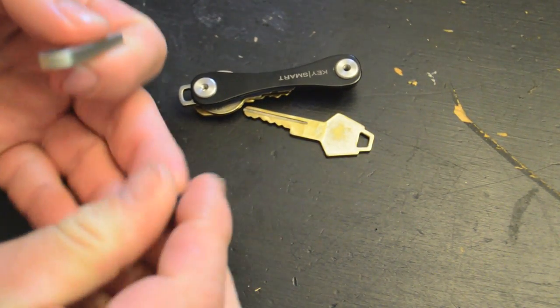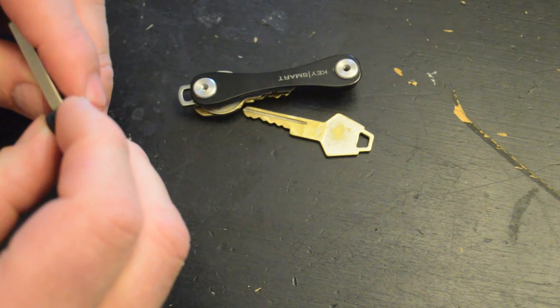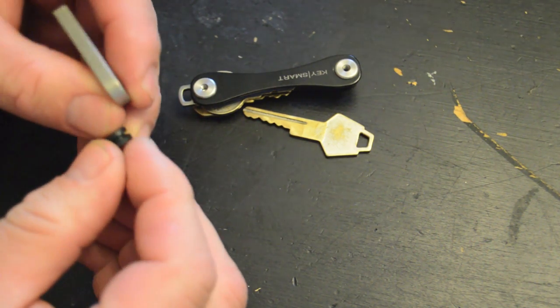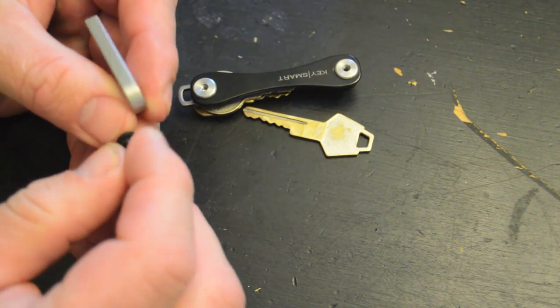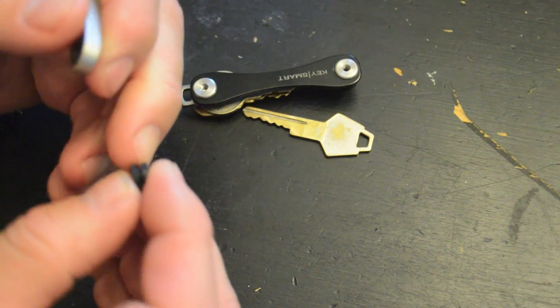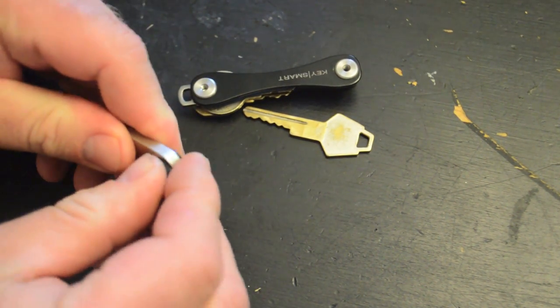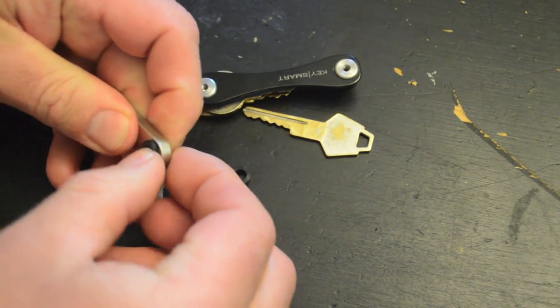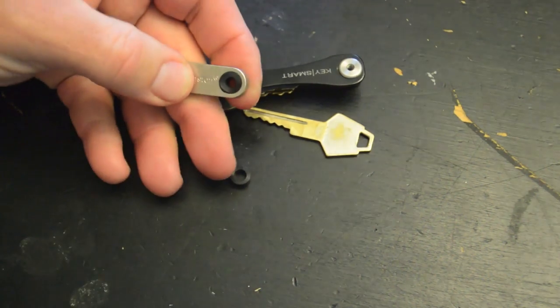But the Lowe's bushing is a little bit thicker and it's a grommet, so it's got a split down the center. But it works just the same. Push it in there.